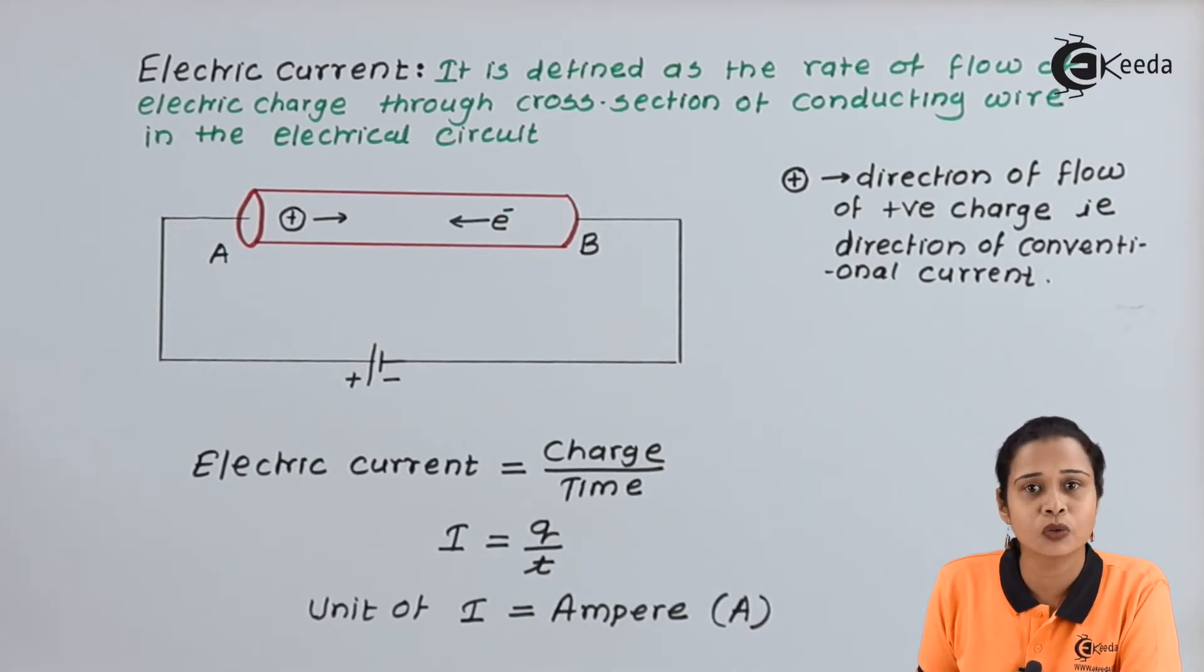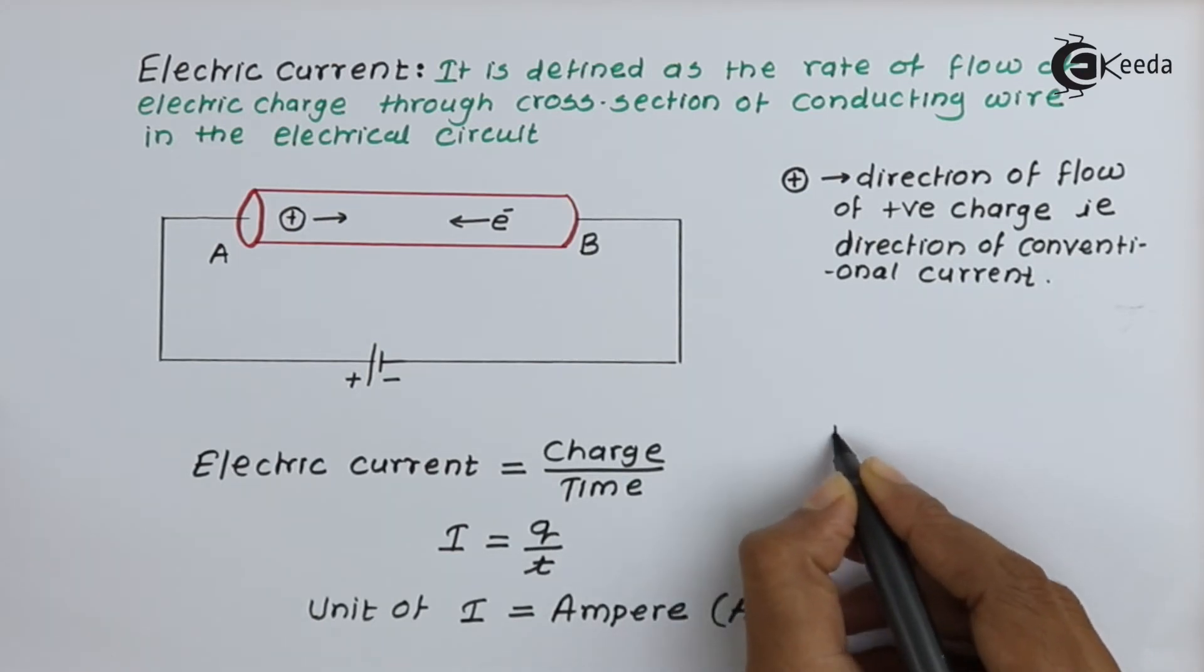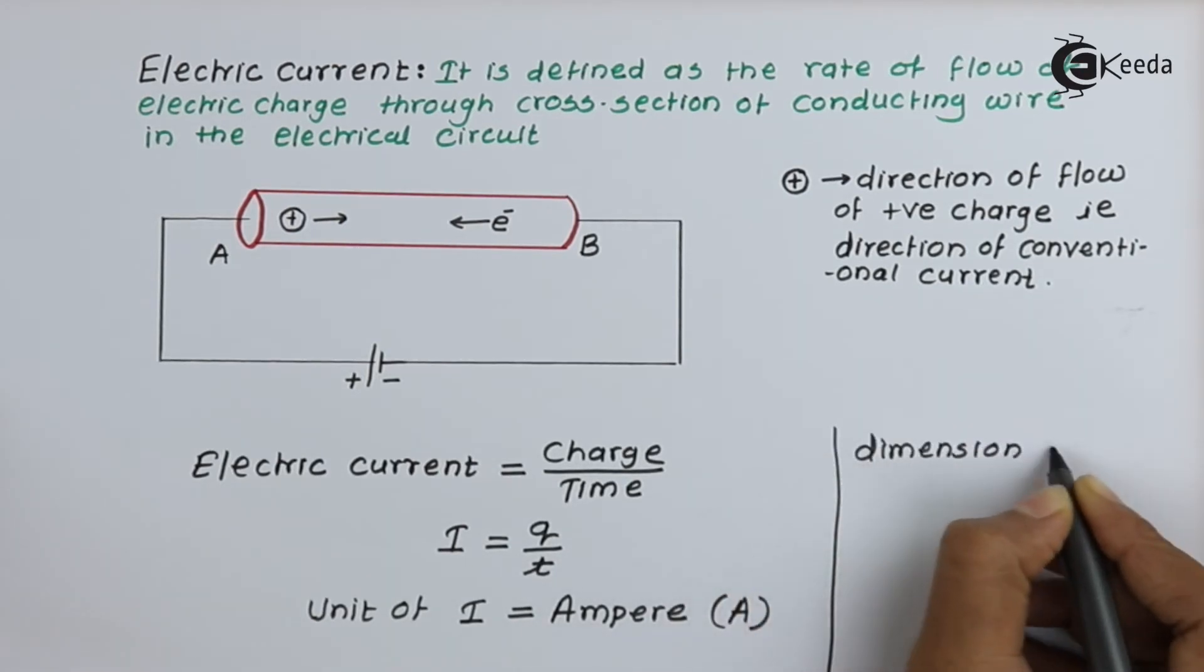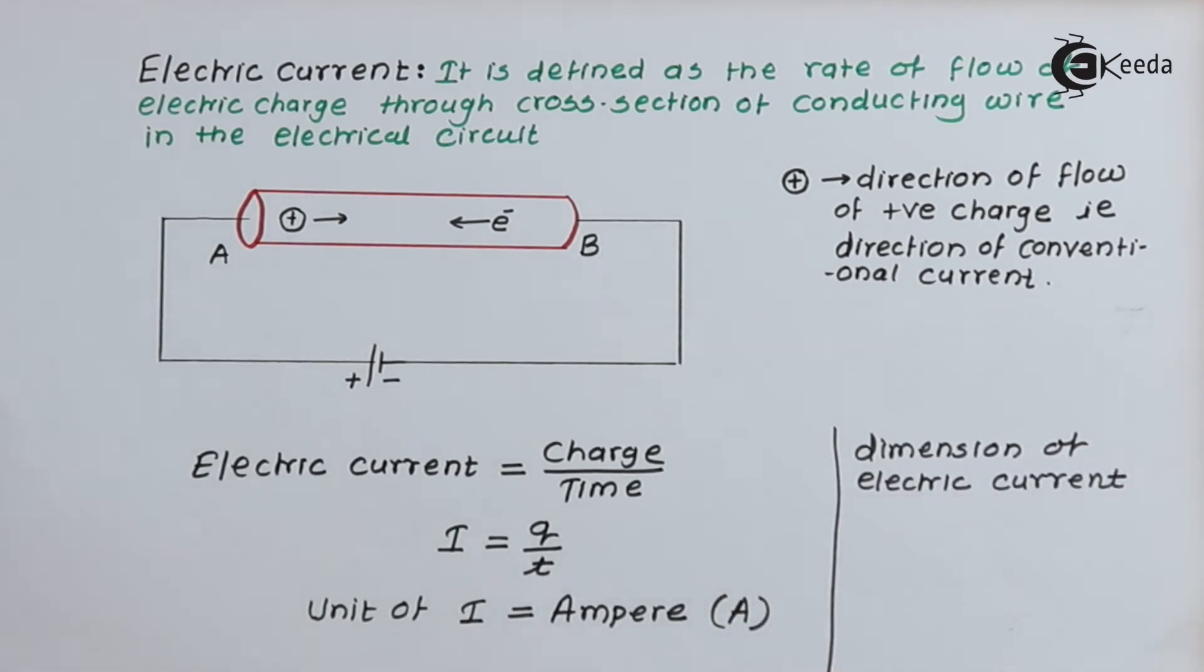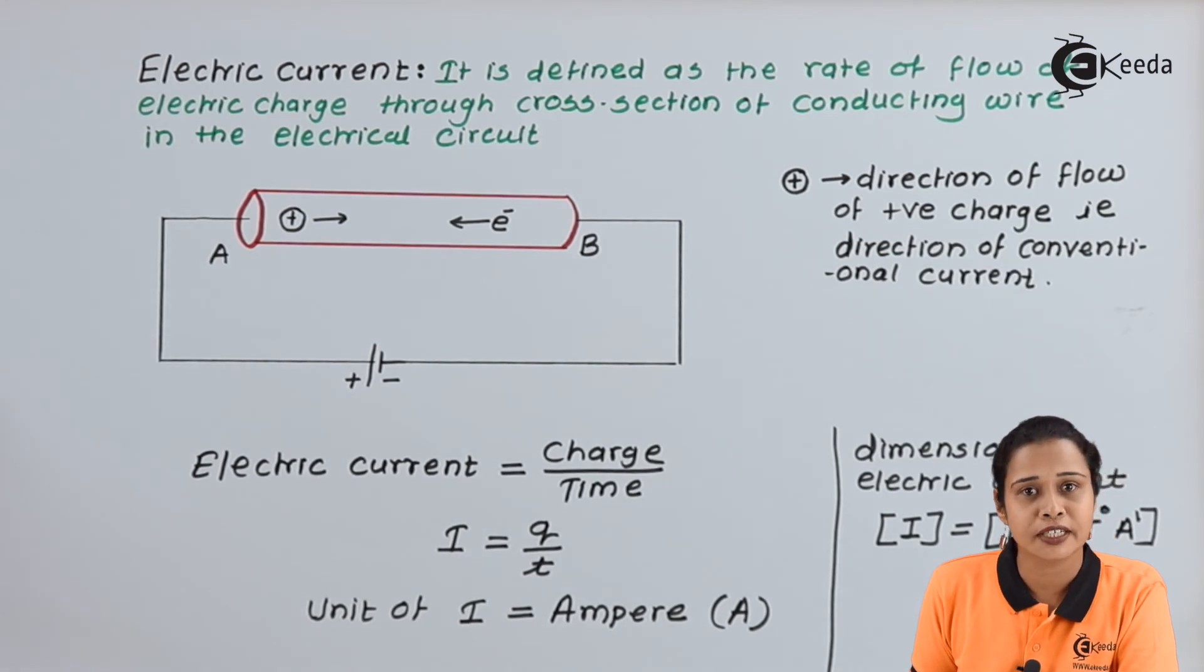Now, let us write down, what are the dimensions of electric current? Dimension of electric current can be written as, we know, the length factor is absent here, mass also absent, T also absent, but here we have an ampere, so we will write down here A. These are the dimensions of electric current.